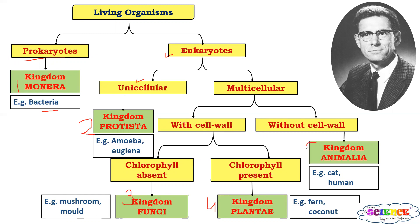And fifth kingdom is Kingdom Animalia, which includes all the animals — all organisms that are eukaryotes. They are eukaryotic, multicellular and they show absence of cell wall — that is, cell wall is absent. And they are heterotrophic, that is they depend for food on other organisms.